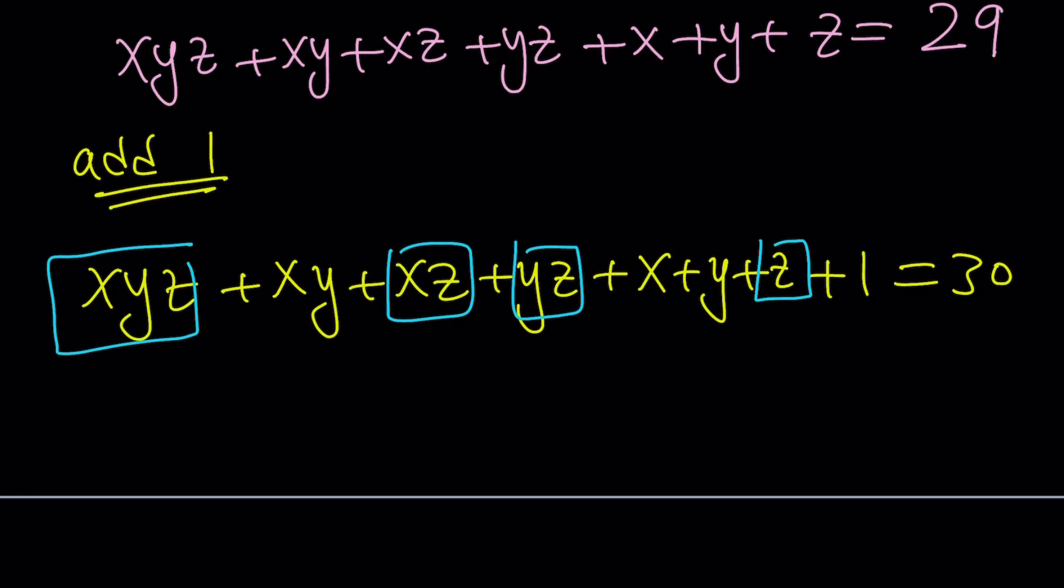So all these terms have z in them. And what's nice about it is that we have a total of eight terms, and half of them has a z and the other half don't have a z.